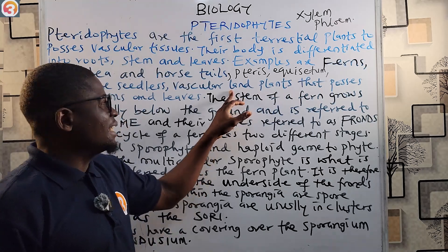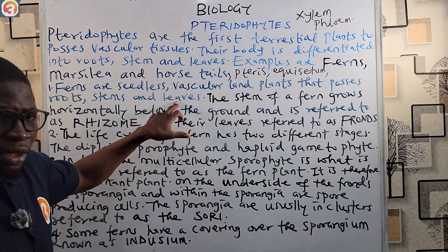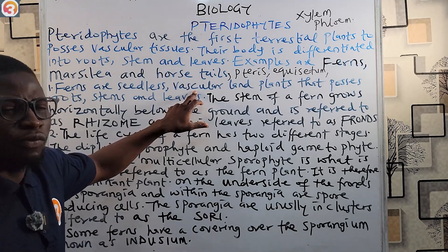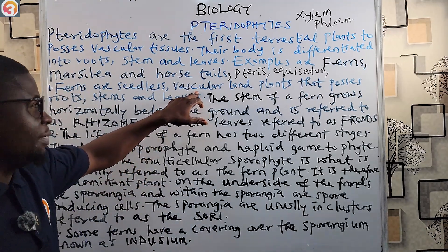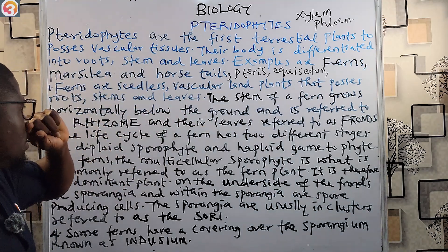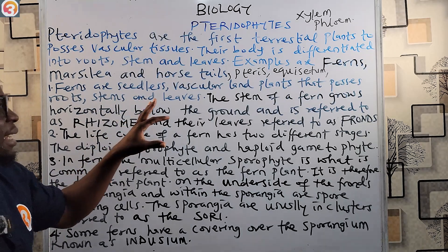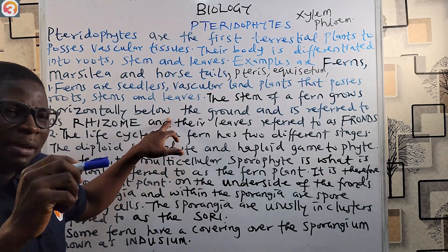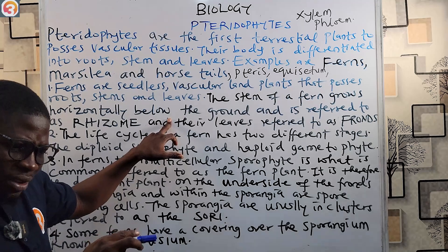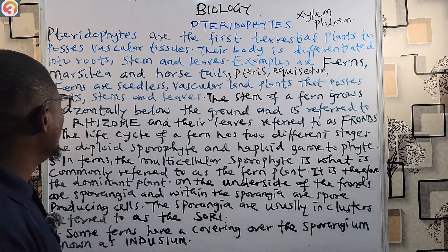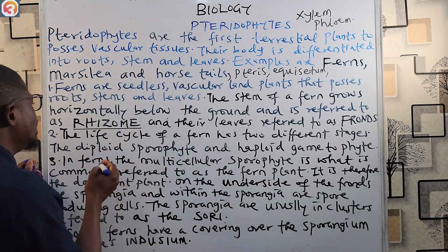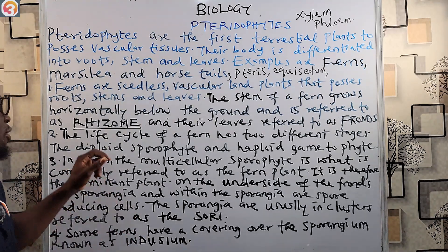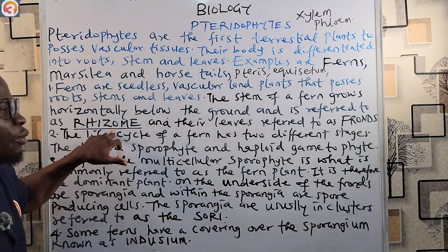Ferns are seedless vascular land plants that possess roots, stems, and leaves. They have specialized tissues for transportation of minerals and water throughout the plant body. The stem of a fern grows horizontally below the ground and is referred to as the rhizome - R-H-I-Z-O-M-E.